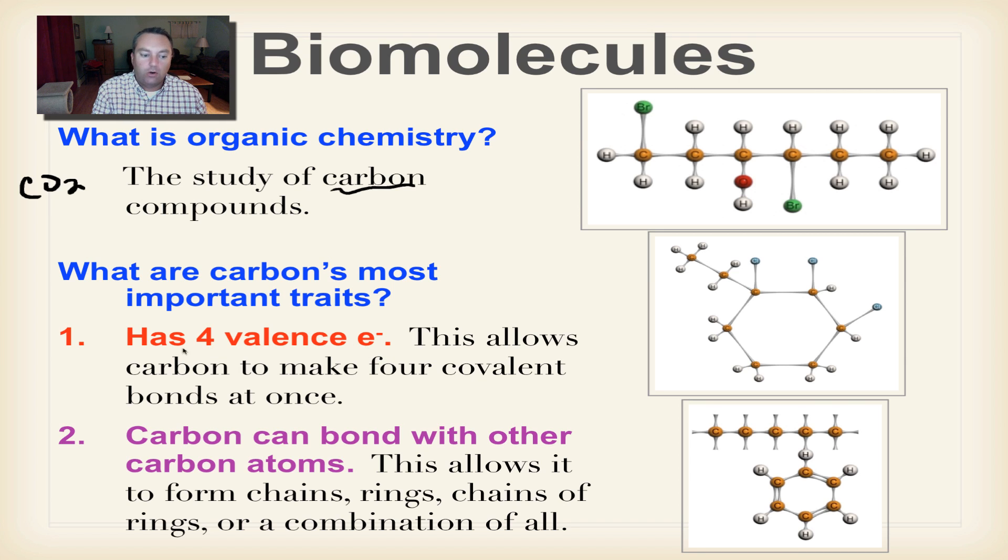So what makes carbon so important? Well, it all starts right here. Four valence electrons. Now, as you've learned in our Chapter 2A series of videos, valence means the outer orbital or the outer shell or the outer energy level of an atom. And it's these valence electrons that are used to make the chemical bonds. So an atom may have 50 electrons, but the only ones that we care about are the ones on the outermost ring, and those are the valence electrons.